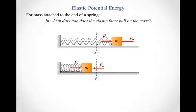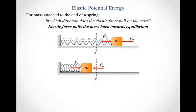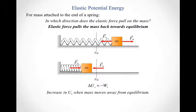Let's start by reminding ourselves what we already know about the work done by the elastic force. In which direction does the elastic force pull on the mass? It always pulls the mass back towards equilibrium — the spring force is always trying to restore the mass back to the equilibrium point. The definition of the elastic potential energy is that it equals negative the work done by the spring. So if the spring is always pulling the mass back towards equilibrium, I will increase the elastic potential energy when I make the mass move away from equilibrium.